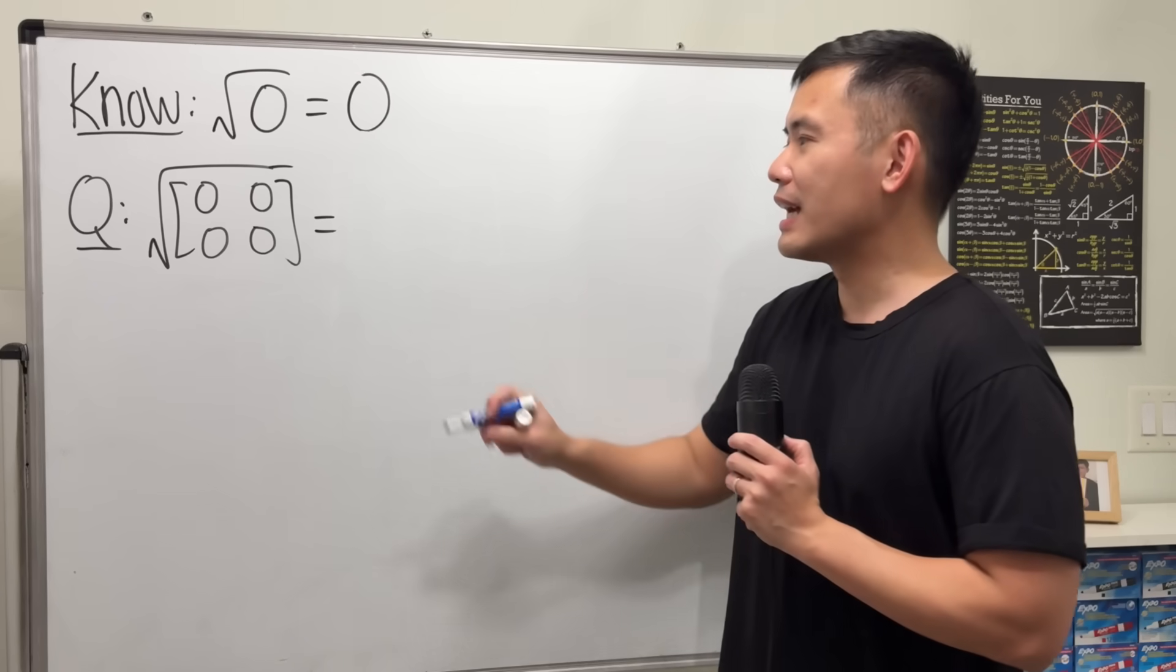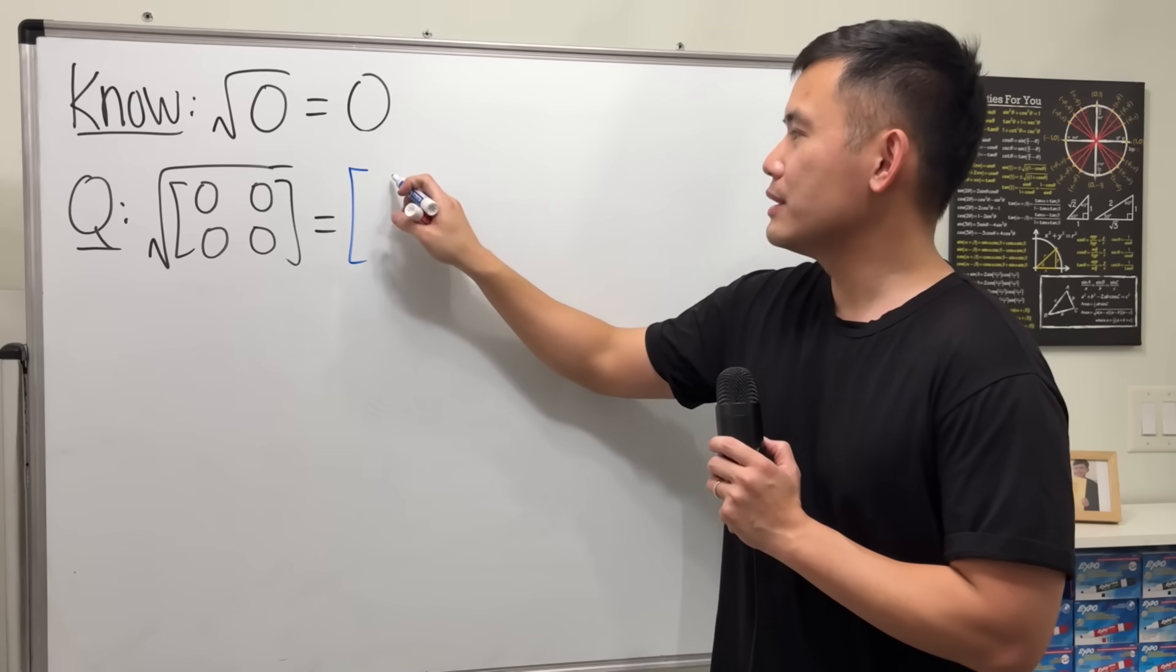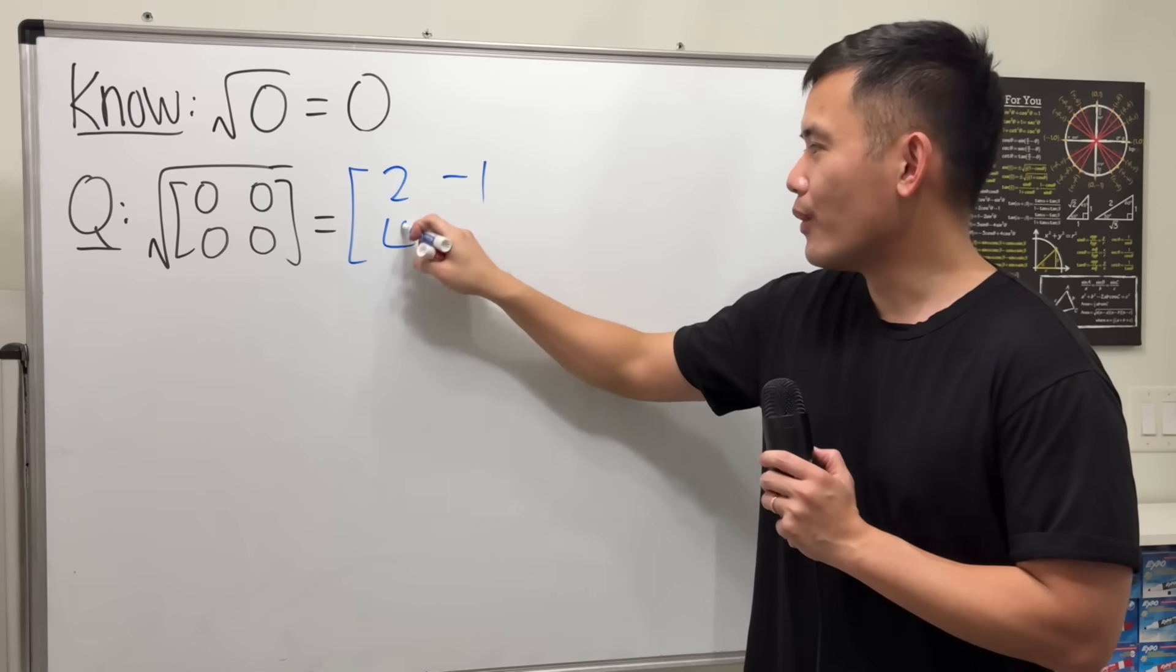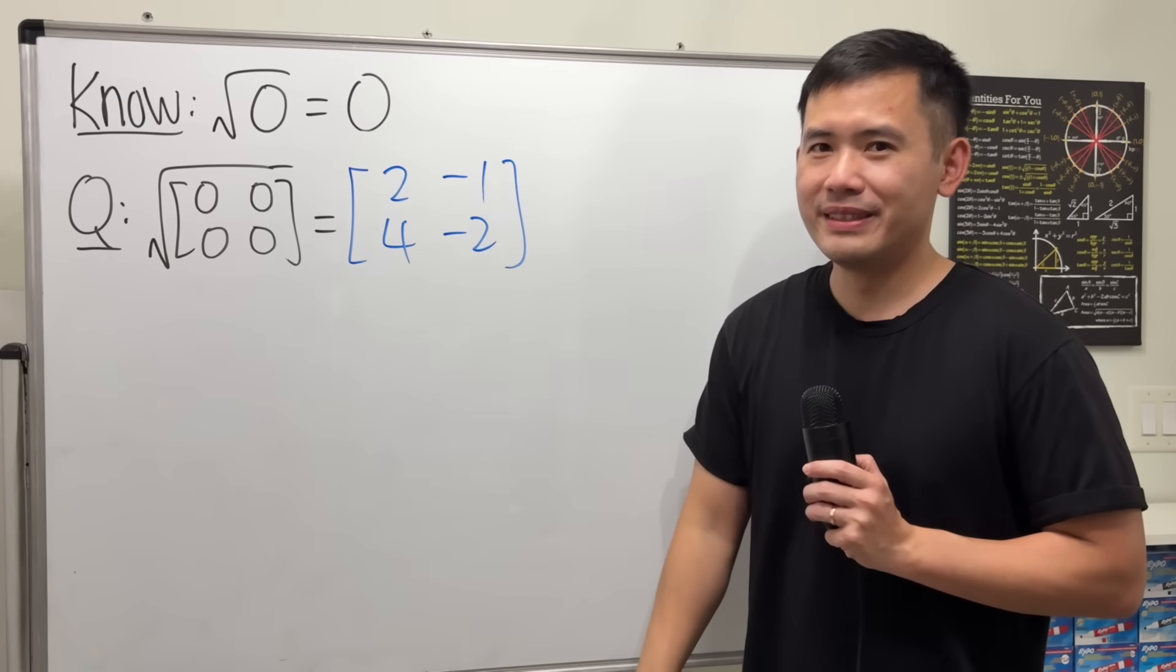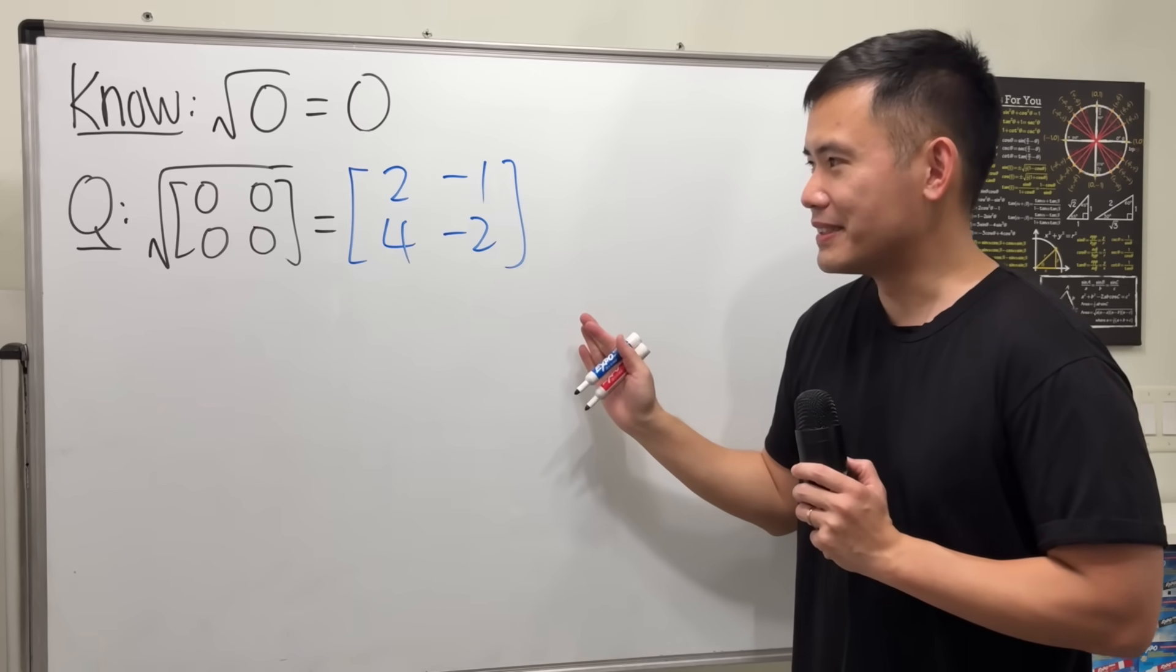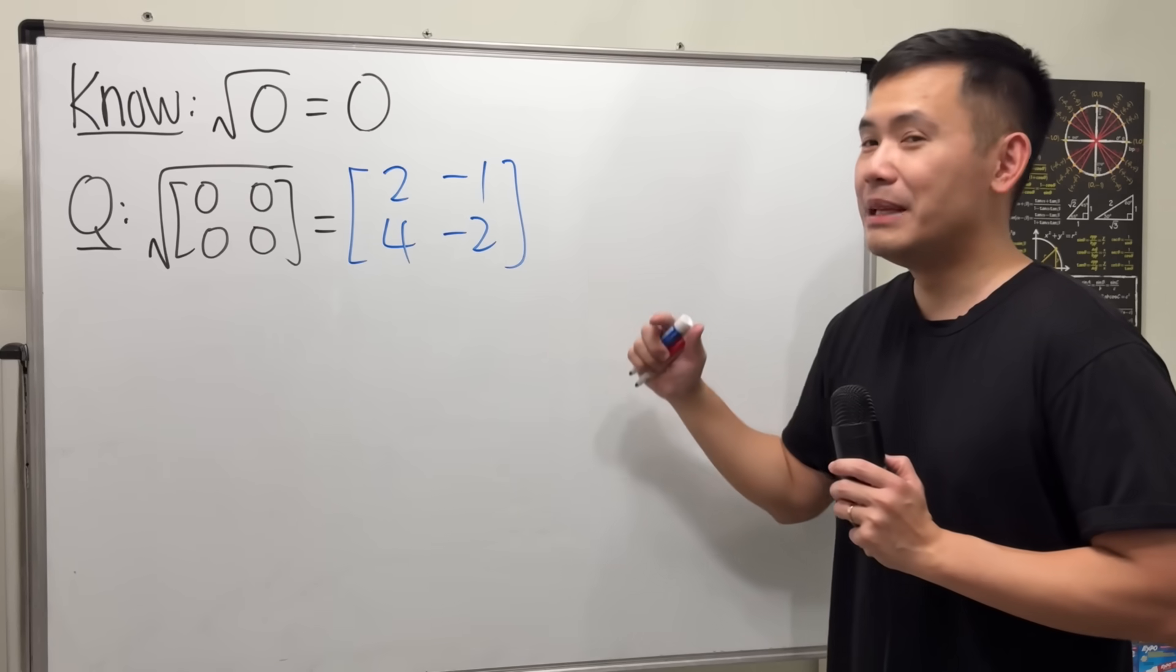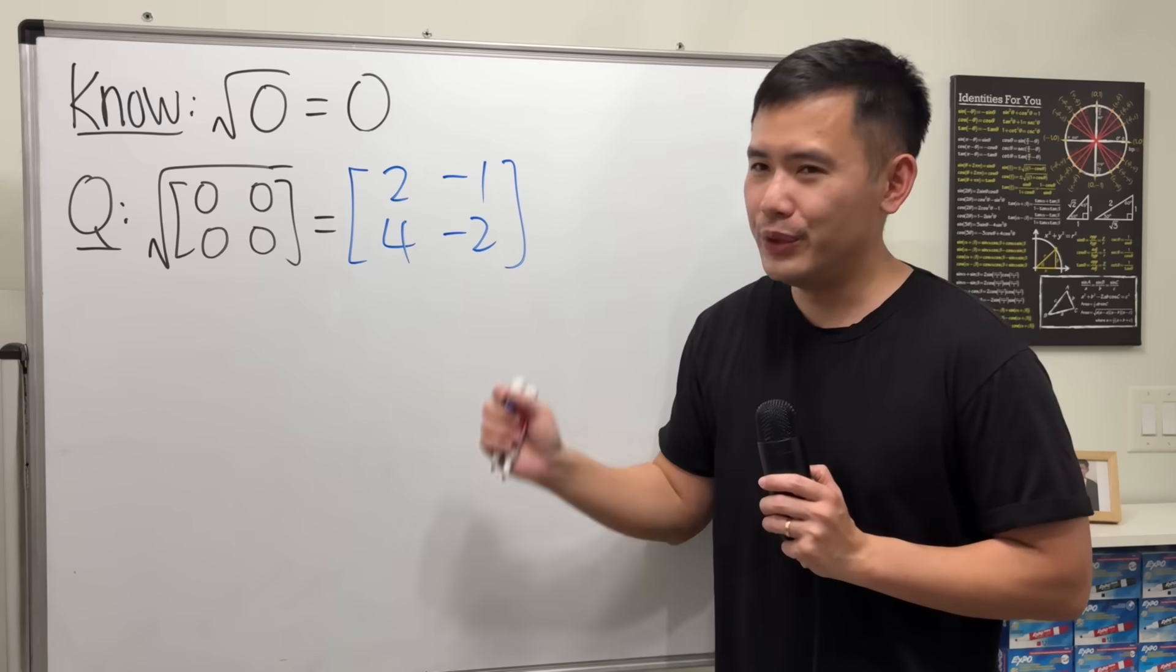Well, I will tell you that the answer for this right here is [2, -1; 4, -2]. It works. In fact, this is just an answer, but before we talk about anything else, let me just verify that this right here really works.